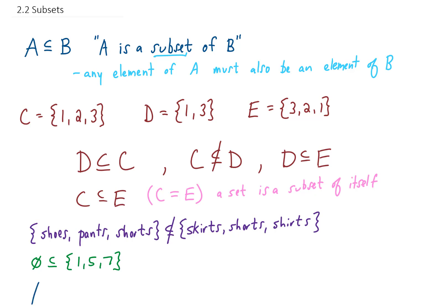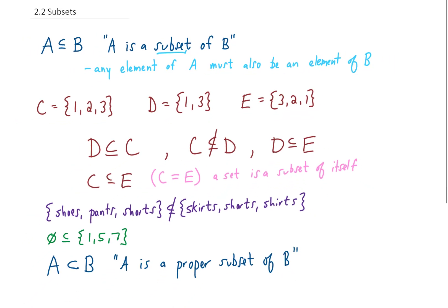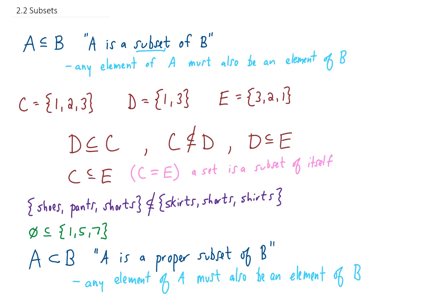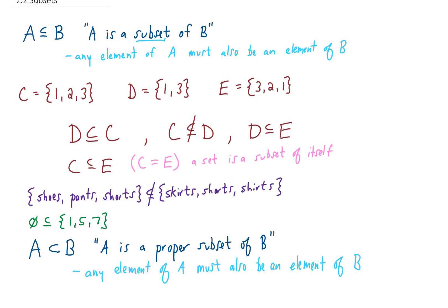Let's bring back our original two sets, A and B. If we put this symbol in between the two of them without the little equal sign, that says that A is a proper subset of B. And the definition of a proper subset starts off the same as the definition of a subset. But for A to be a proper subset of B, A cannot equal B.